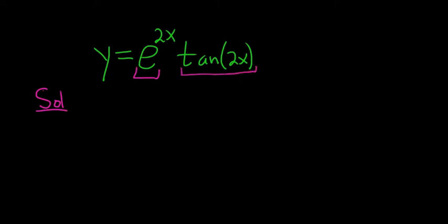The product rule says if you have two functions, f times g, the way I do it is it's the derivative of the first, so f prime times the second plus the first times the derivative of the second piece.